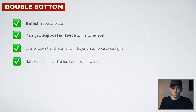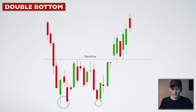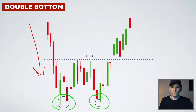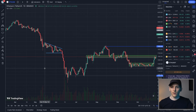A double bottom pattern is a bullish reversal pattern — the exact opposite of a double top. The price gets supported twice at the same level, there's a loss of downward momentum, and buyers force the price higher. Buyers try to catch a further price move upwards and trade the breakout. In the textbook example: a downtrend, buyers support the price once and twice, and we trade the breakout of the neckline in a long position with a stop loss somewhere within the pattern.